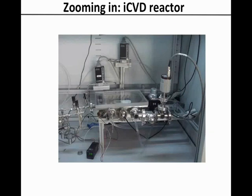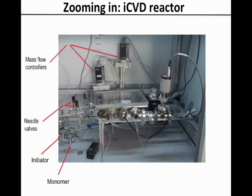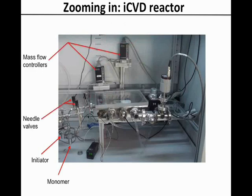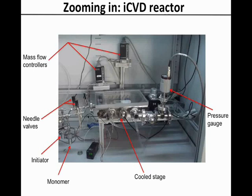The initiator and monomer jars are placed at the left hand side. The flow rates of precursor vapours are controlled by needle valves or mass flow controllers depending on their volatilities. A capacitance pressure gauge is used to measure the pressure inside the reactor. There is also a water circulated cooling stage located at the bottom of the reactor to promote cooling of the substrates during depositions. The throttling valve allows for downstream pressure control.